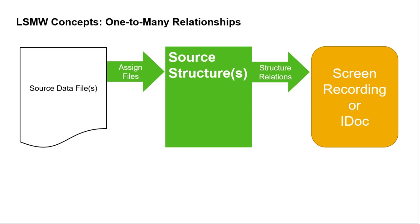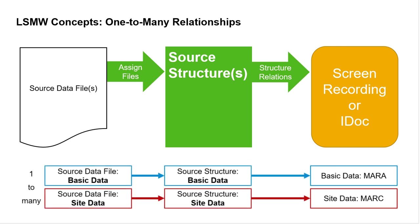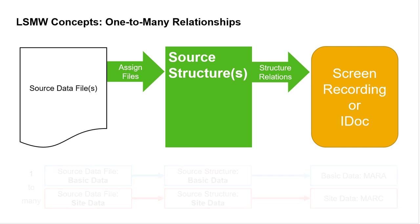For a slightly more complex scenario — say you want to update purchasing organization on the Logistics DC view of the article master for multiple distribution centers — that's table MARC, and the primary key is the combination of article number and site number (material number and plant number for non-retail systems). That scenario requires multiple target structures: basic data level and site level. Likewise, multiple source data files are needed — one for the basic data and one for the site level data. One IDoc will be created for each article number, but each IDoc may have multiple segments for the site level data, one for each article-site combination.